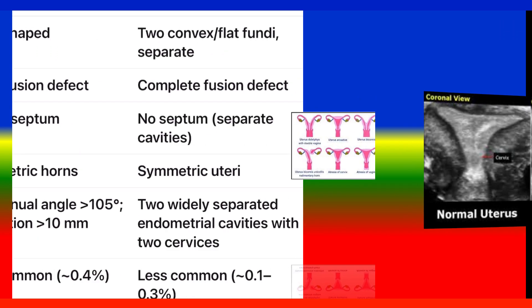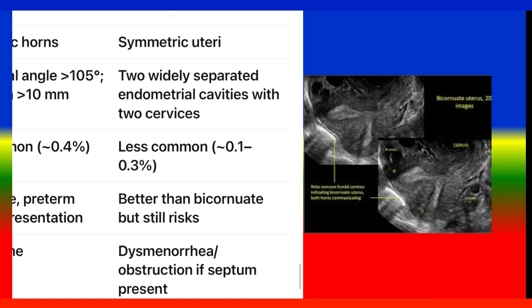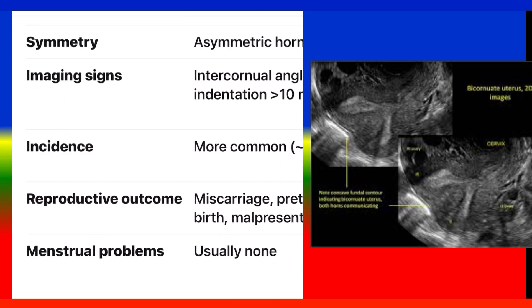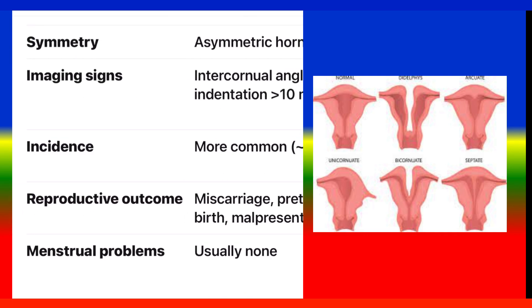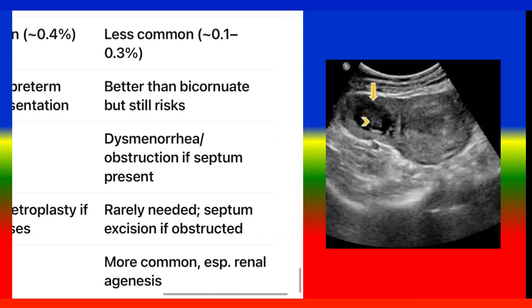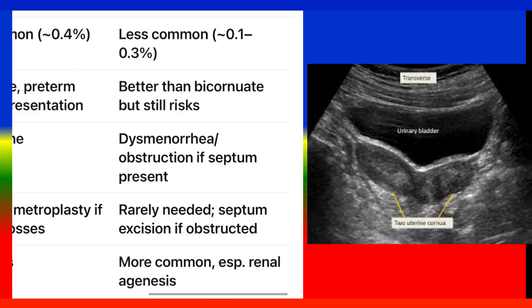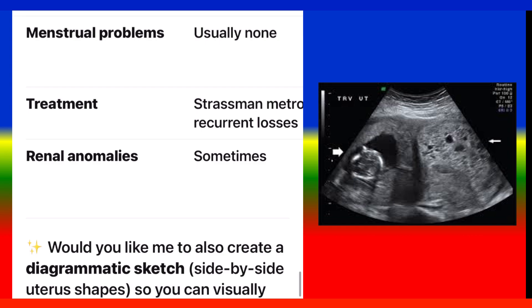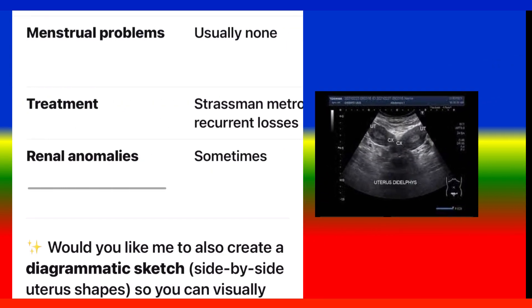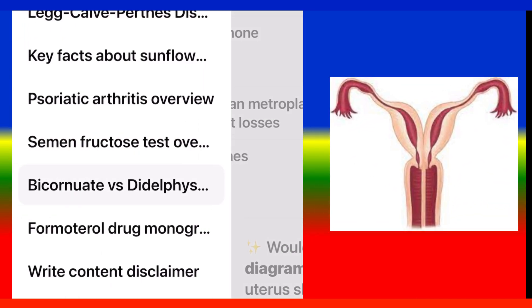Continuation of comparison table. Septum: no true septum (myometrial division) vs. no septum, separate cavities. Symmetry: asymmetric horns vs. symmetric uteri. Imaging signs: intercornual angle over 105 degrees, indentation over 10 mm vs. two widely separated endometrial cavities with two cervices. Incidence: more common at 0.4% vs. less common at 0.3%. Reproductive outcome: miscarriage, preterm birth, malpresentation vs. better than bicornuate but still risks. Menstrual problems: usually none vs. dysmenorrhea or obstruction if septum present. Treatment: Strassman metroplasty if recurrent losses vs. rarely needed, septum excision if obstructed. Renal anomalies: sometimes vs. more common, ipsilateral renal agenesis.